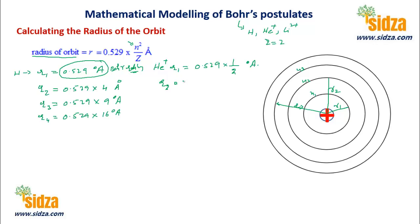R2 of the helium ion will be equal to 0.529 times 2 squared which is 4, divided by atomic number 2 angstroms. Simplifying, it will be 2 times 0.529 angstroms.